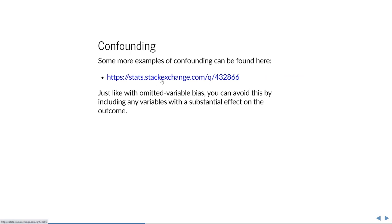There are many other examples of confounding. Just like with omitted variable bias, you can completely avoid the problem of confounding simply by including any variables with a substantial effect on the outcome.